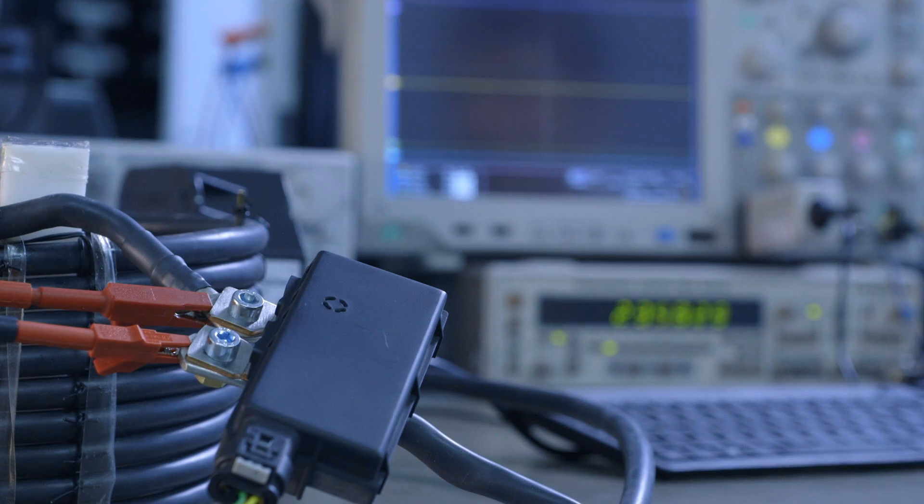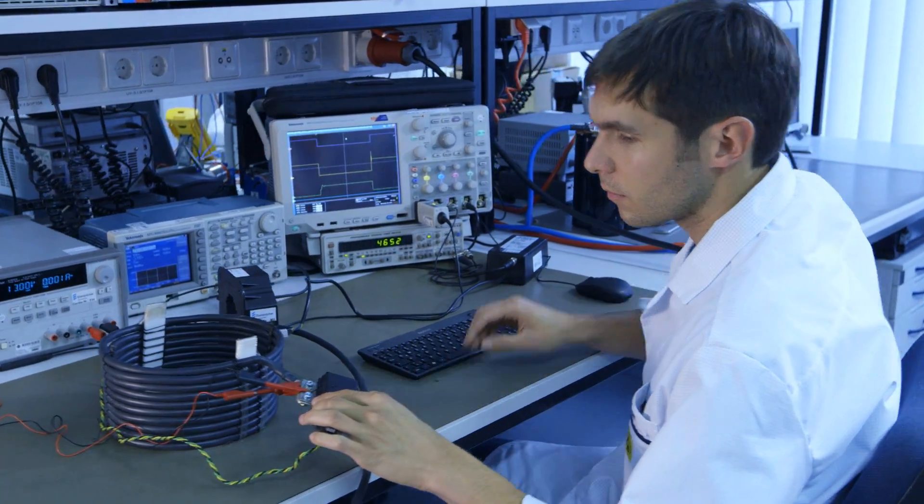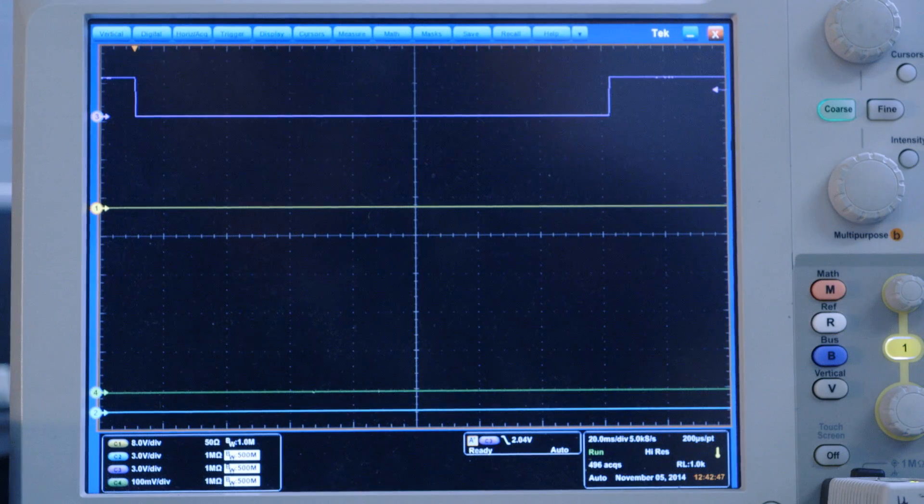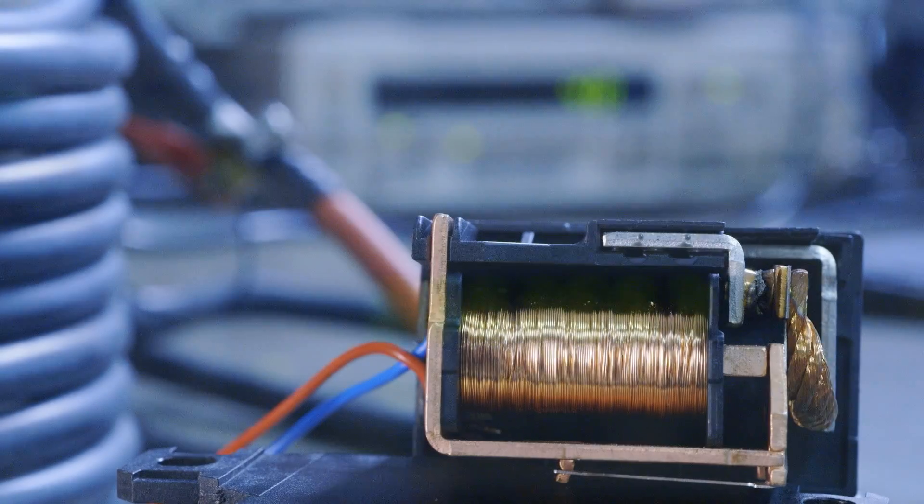Currents up to 400 ampere can be switched off even at line inductance levels of 10 microhenry. The Q diode has significantly shorter switching times and higher switching cycles than an electromechanical relay.